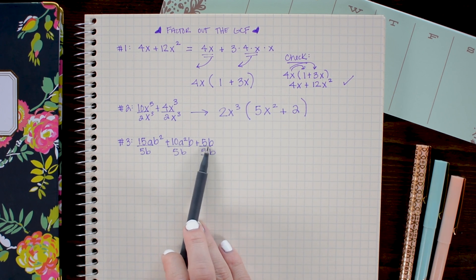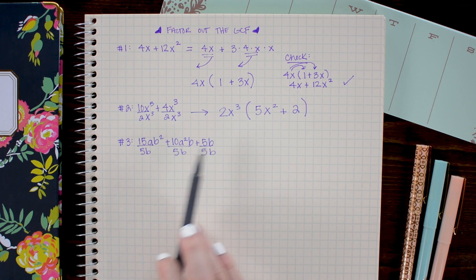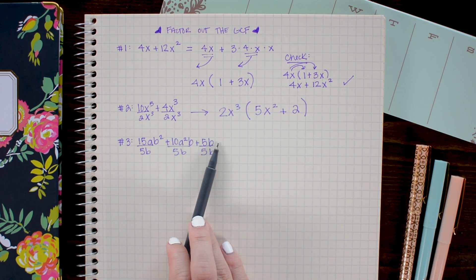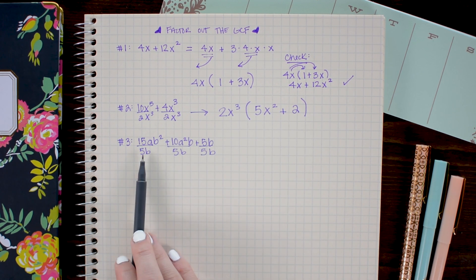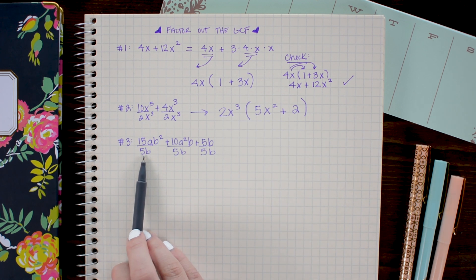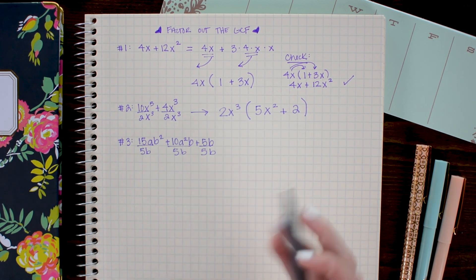So you need to make sure that whatever you're pulling out is common to all of the terms in your equation. Here we have 5b as the greatest common factor. So I'm going to write that in front.